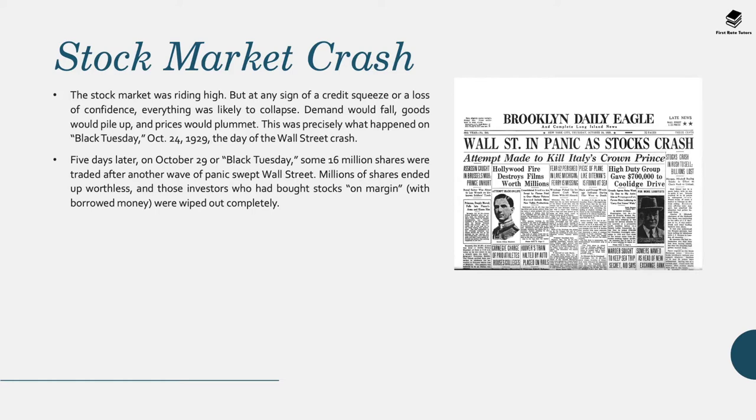With the stock market riding high, any sign of a credit squeeze or a loss of confidence meant everything was likely to collapse — demand would fall, goods would pile up, and prices would plummet. This is precisely what happened on Black Thursday, October 24th 1929, the day of the Wall Street crash. Five days later on October 29th, Black Tuesday, some 16 million shares were traded after another wave of panic swept Wall Street. Millions of shares ended up worthless and investors who had bought stocks were wiped out completely.